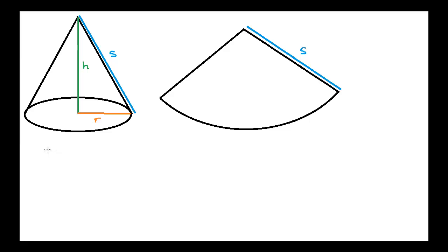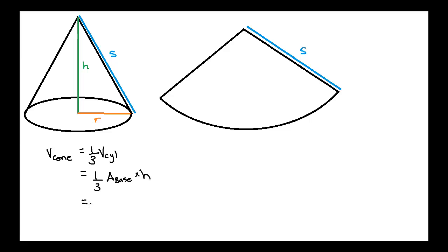The volume of the cone is equal to one-third the volume of the cylinder of the same dimensions. The volume of the cylinder, or actually any prism, is just the area of its base times its height. So this would mean that it is equal to one-third times the area of the base times its height. And the area of the base is the area of a circle, so this would be pi r squared. So the volume of a cone is one-third pi r squared h.